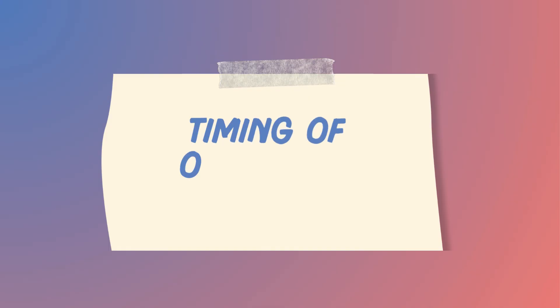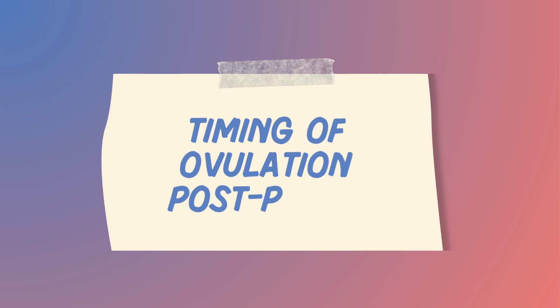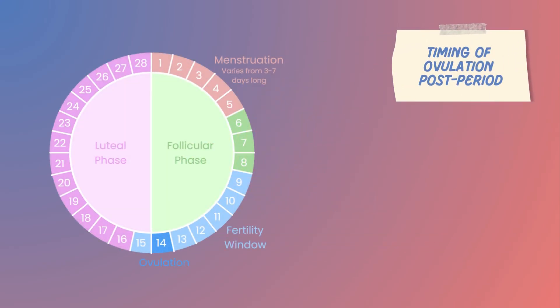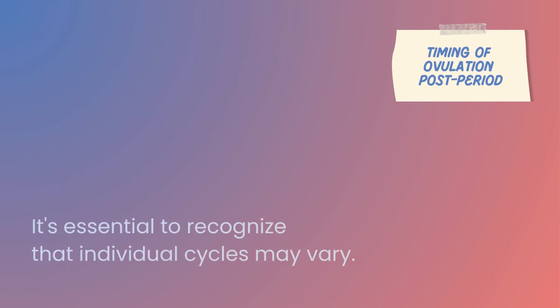Now, let's explore the timing of ovulation in relation to the menstrual cycle. While the average menstrual cycle spans 28 days, ovulation typically occurs around day 14.